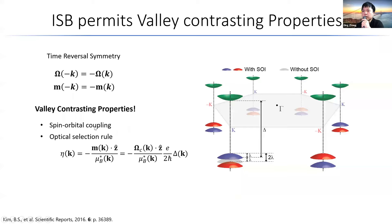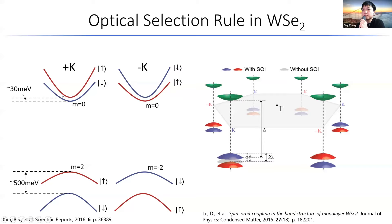Other properties that can be non-zero without an inversion center include spin-orbit coupling and valley-dependent optical selection rules. Due to spin-orbit coupling, we see that the valence band is going to split into two energy levels according to their spin polarization. We'll talk about the optical selection rule in greater detail.